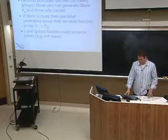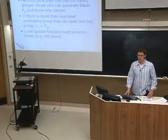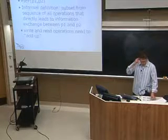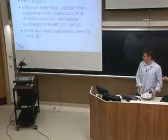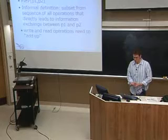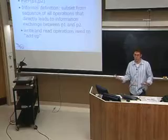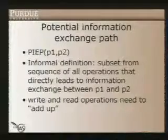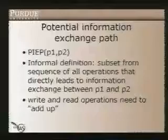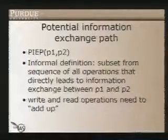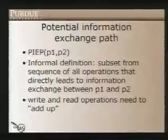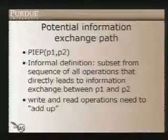The label update function must preserve the labels that we are propagating — in the example I used set union. I am also defining what I call a potential information exchange path between two principles on a system. Informally, this is a subset of the total operations that directly lead to information being passed along: p1 writes to an object, another principle reads from the object, and that principle finally communicates with p2.